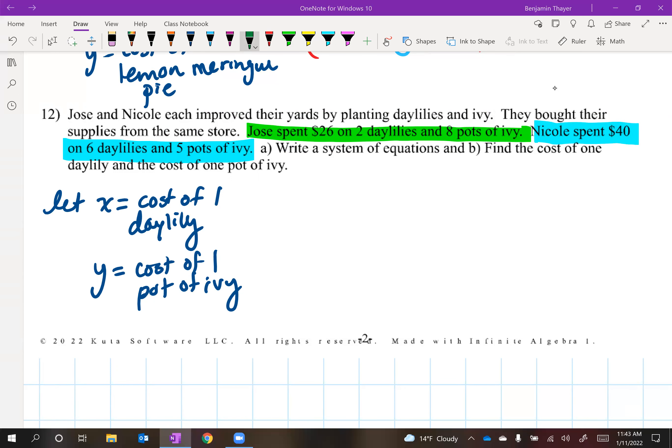Okay. Welcome back. Let's go ahead and write down our green equation. 26 equals 2x plus 8y. How'd your team do? How about the blue equation? How about 40 equals 6x plus 5y? You've got your system.